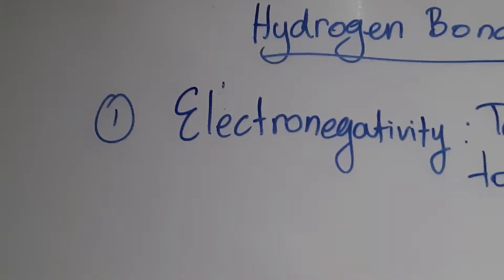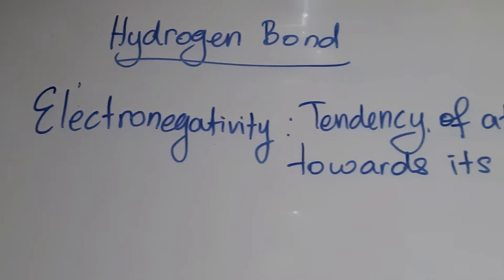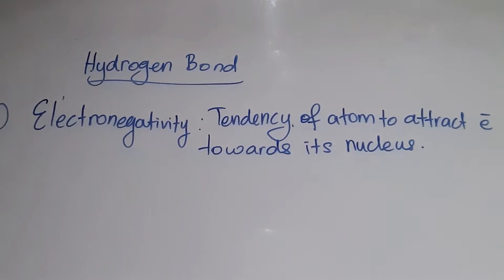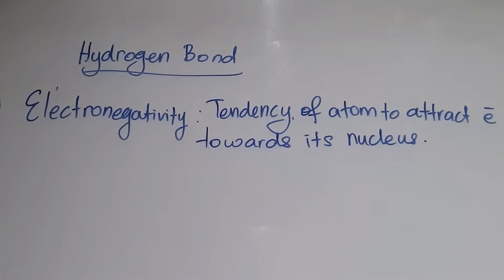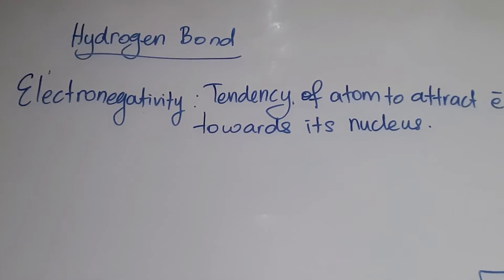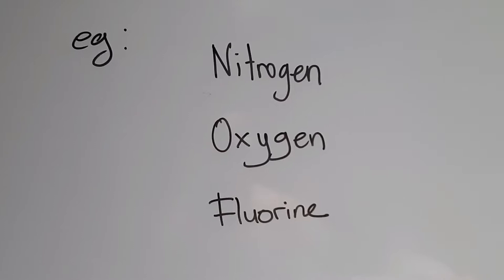Let's look at certain terms. Firstly, when we want to learn about hydrogen bonds, you have to be very clear about electronegativity. Electronegativity is the tendency of an atom to attract electrons towards its nucleus, as you have learned in Chapter 4 previously. If you look at your periodic table from left to right, towards the right the elements are more electronegative. We are focusing on the first three elements with the most electronegative elements.